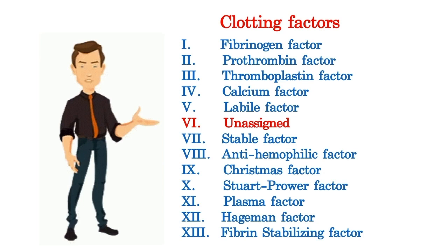Factor 7 is stable factor. Factor 8 is antihemophilic factor. Factor 9 is christmas factor. Factor 10 is Stuart Prower factor. Factor 11 is plasma factor. Factor 12 is Hageman factor, and fibrin stabilizing factor is the last one, factor 13.